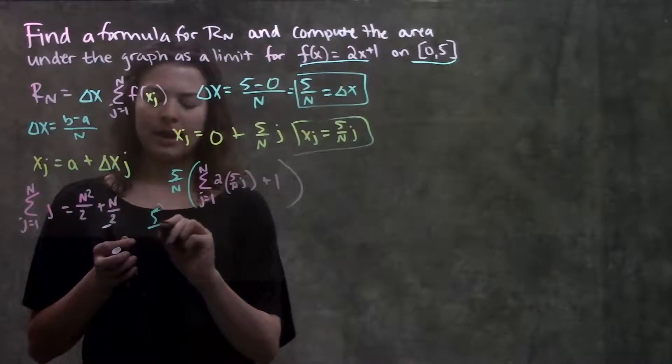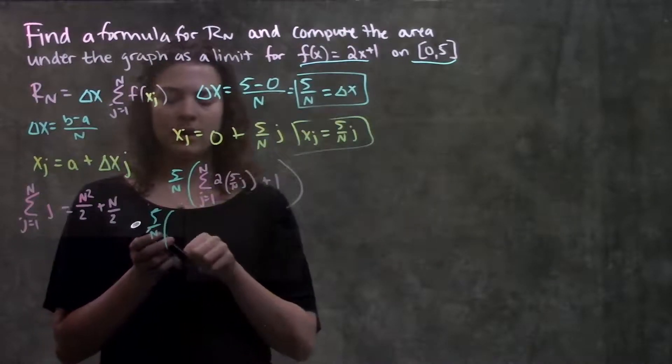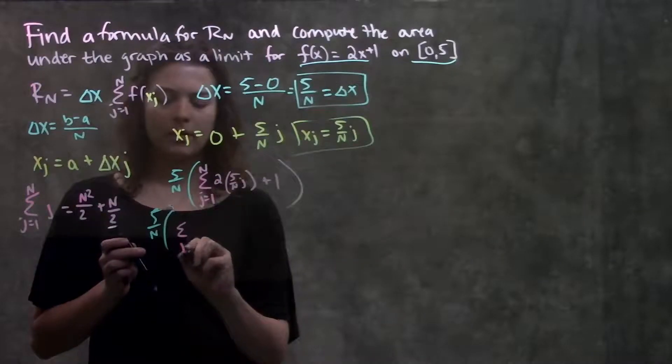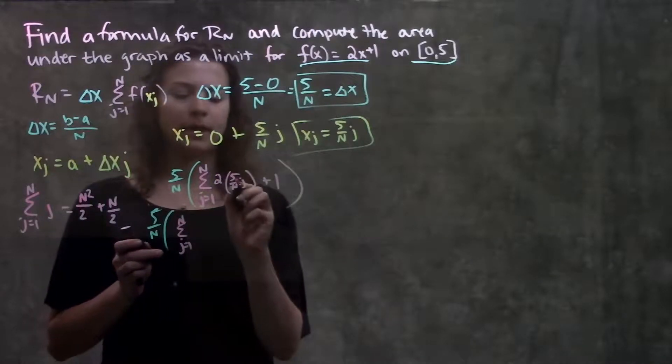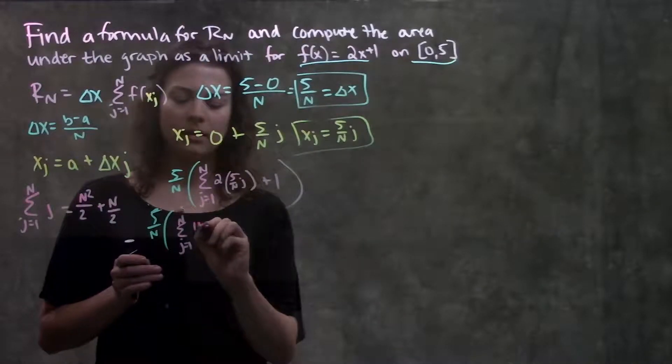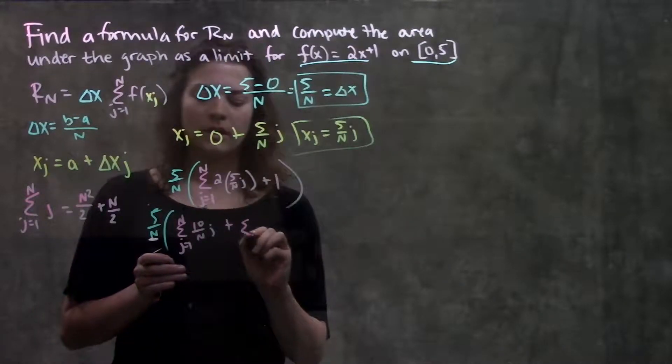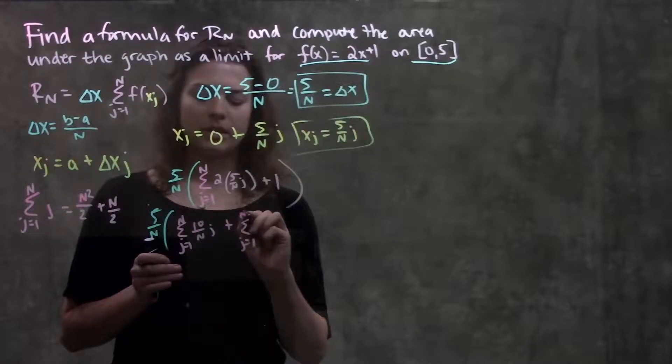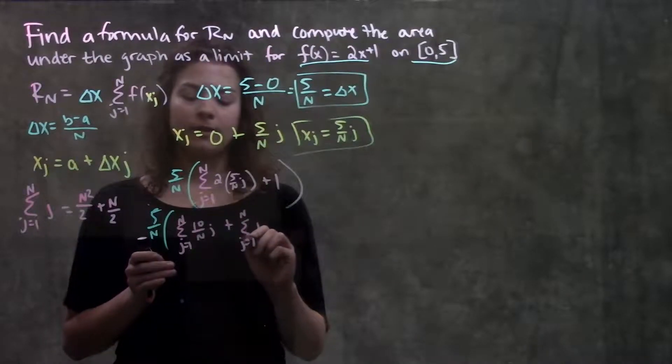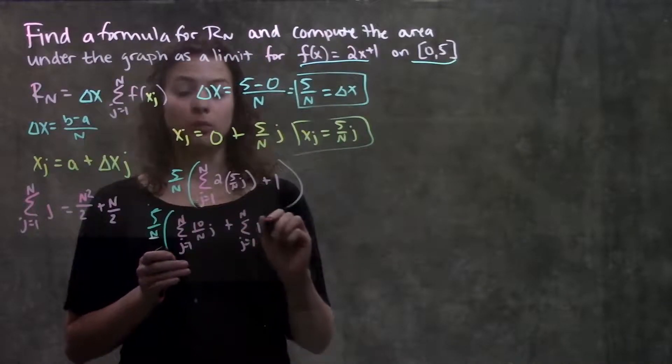So, simplifying this, I still have my 5 over n on the outside. On the inside here, I'm going to multiply out this part, and I get 10 over n times j, and I'm going to go ahead and separate these two things, so that I have a second summation of, from j equals 1 to n of just 1.